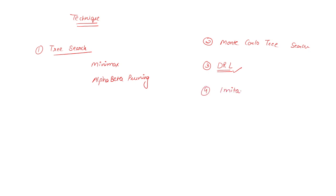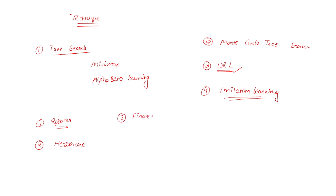Another technique is imitation learning, where AI learns by observing expert gameplay and mimicking those strategies. Beyond games, these algorithms have applications in robotics for real-time decision making and strategic planning, in healthcare for optimization of treatment strategies, in finance for predictive modeling and decision making, and in operations research for solving logistics and scheduling problems.